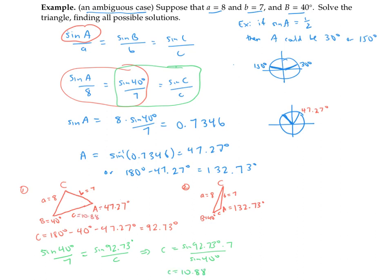For the right hand triangle, we can carry out the same steps to get angle C, and now plug into the law of sines to get side length c. We finished solving for the two possible triangles with these given side lengths and angle.